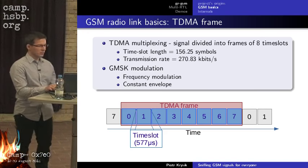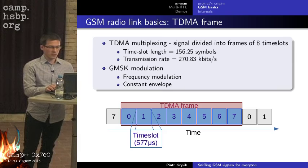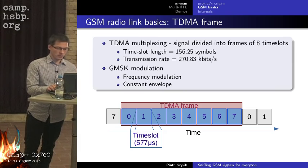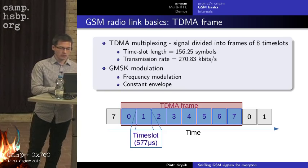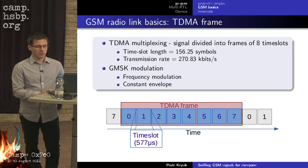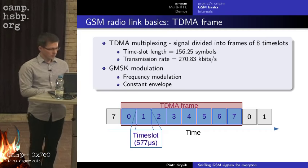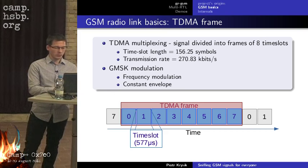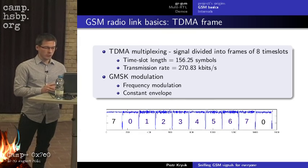A quick introduction to GSM: the signal is divided into TDMA frames that have eight time slots inside. Each time slot is 156.25 symbols long, giving 577 microseconds per time slot at the GSM sampling rate. If you look at a real signal from the GSM broadcast channel, the envelope of the signal is constant with one exception.